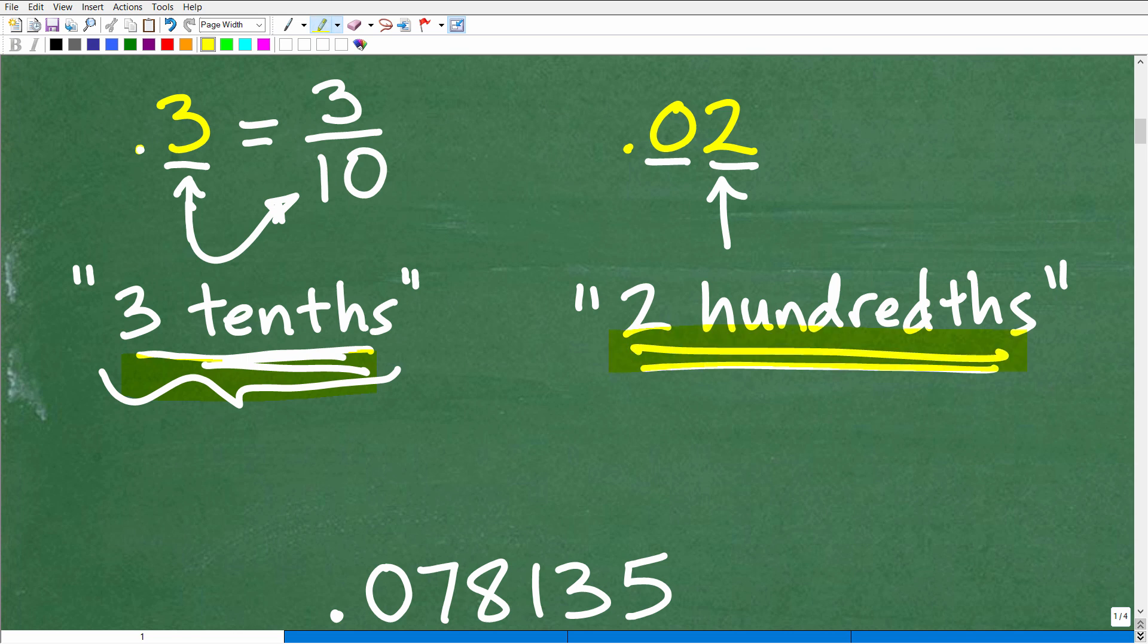Okay, that's again how we would pronounce this decimal or describe this decimal using place value. So 0.02, same thing as two hundredths, which of course is equivalent to the fraction 2 over 100, which is also equivalent to the fraction 1 over 50 if we reduce or simplify that fraction.